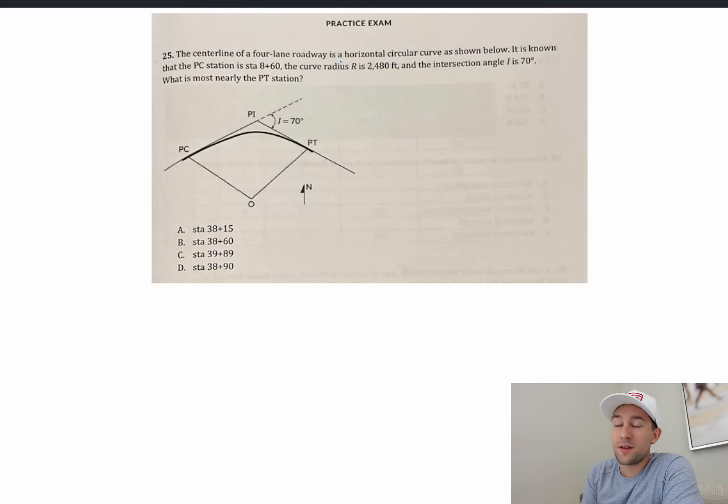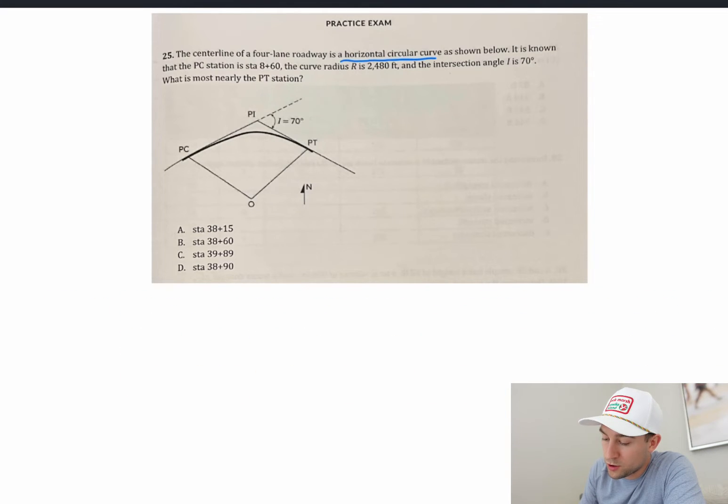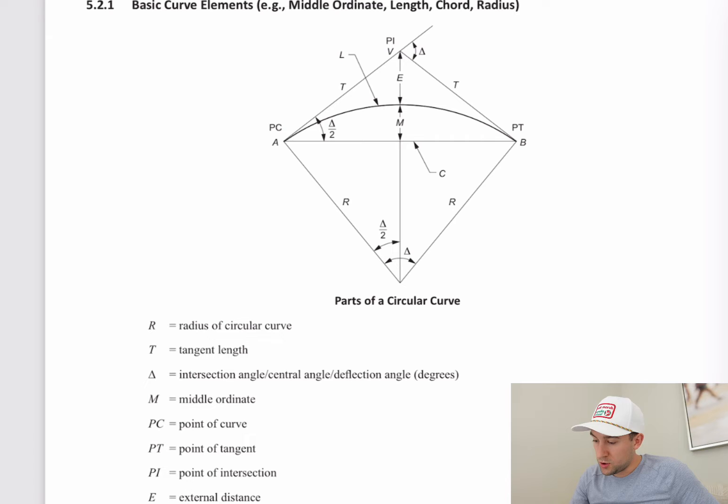Now, if you've read that question and had absolutely no idea how to even solve it, I would say one of the first things about taking this PE exam is you get a reference manual. So let's say if you were to read this and you don't even know where to start, I think some buzzwords here that I'm going to circle is horizontal circular curve. I actually have this PE reference manual open.